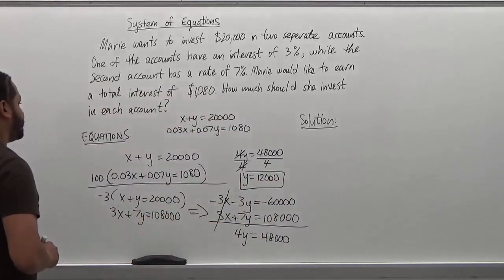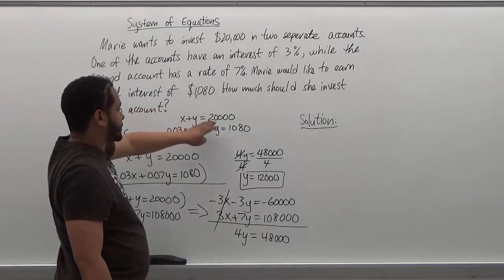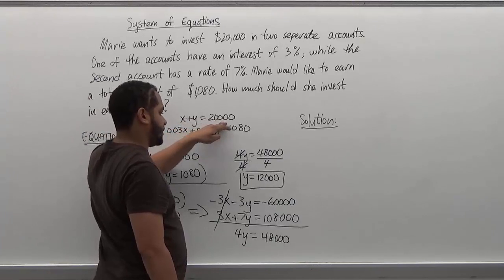And what we need now is the x value. And we have an equation here. We're going to use the top equation because it's the simplest one to solve. So we know x plus y equals 20,000.